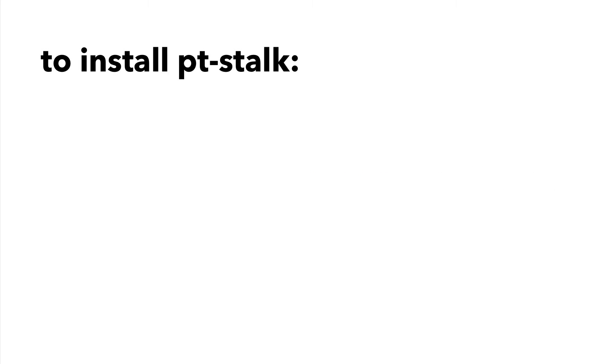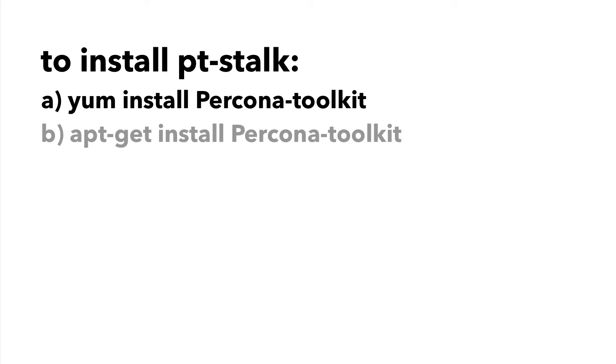You can install it very easily from the repository, or you can simply download just pt-stalk with this command. The way pt-stalk works in essence is very simple: it runs a certain check in a loop, by default once a second, and whenever a predefined condition is met for x number of times in a row, it starts data collectors. To start pt-stalk in foreground with default configuration, which works really well in most cases, run the following.